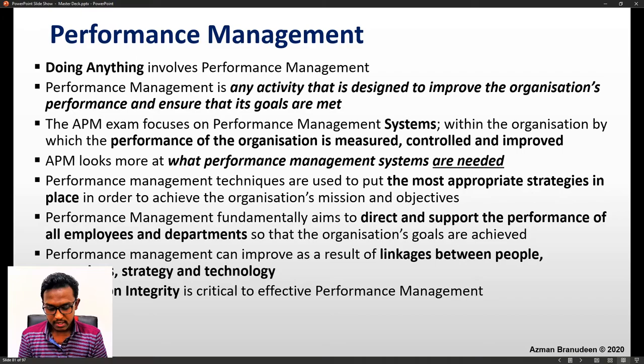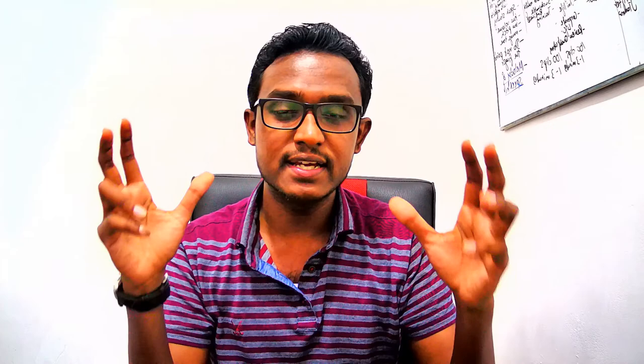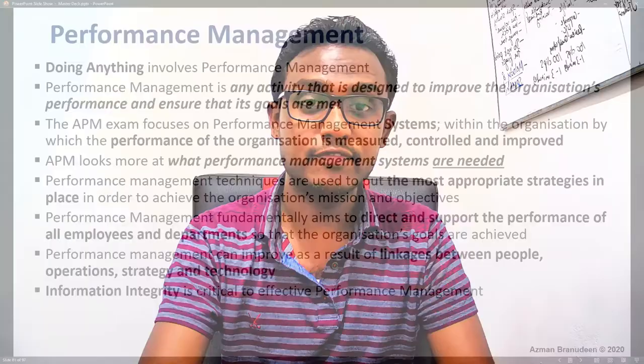The system has to cater to everybody — everybody should understand it, be hooked into it, and it should create links between people, operations, strategy, and technology. Information integrity is critical to effective performance management. The better the intelligence you have about what's going on in the company, the more accurate the information, the better your decisions are and the better your performance becomes. This is why the P5 syllabus focuses heavily on management information systems, which must provide information that is accurate, reliable, relevant, and timely. Bad information leads to bad decisions; good information leads to good decisions.